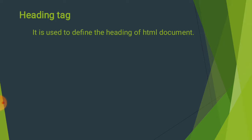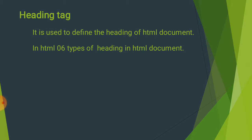Heading Tag: It is used to define the heading of the document. HTML में Heading को describe करने के लिए अलग-अलग Tags दिए गए हैं, जिससे हम decide करते हैं कि किस प्रकार का Heading mention करना है। HTML में 6 प्रकार के Headings होते हैं — Six Types of Headings in HTML Document.